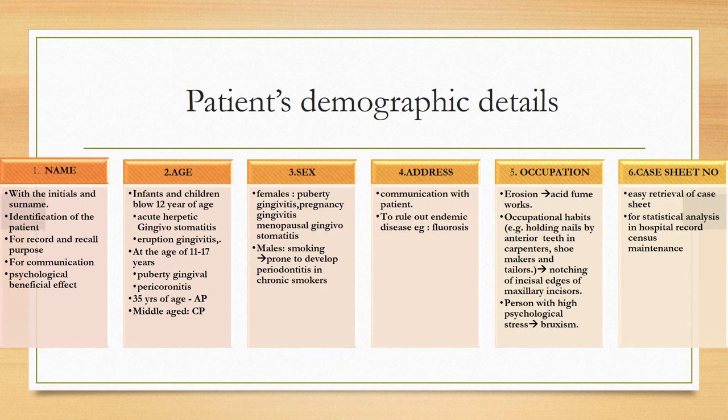For infants, eruption gingivitis and acute herpetic gingivitis/stomatitis are common. For ages 11–17, puberty gingivitis and pericoronitis may be seen. Gender should be noted as some diseases differ between females and males: females may present with puberty gingivitis, pregnancy gingivitis, and menopausal gingivitis, while male patients are more prone to smoking-related periodontitis and chronic smoking-related conditions.